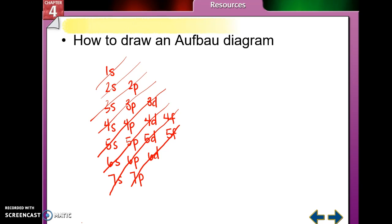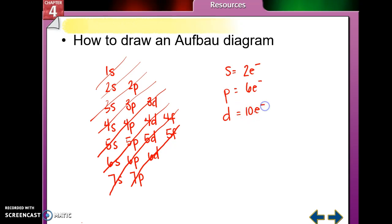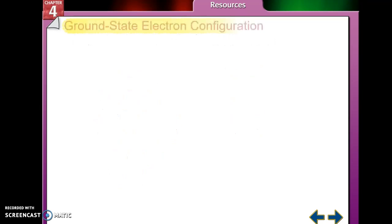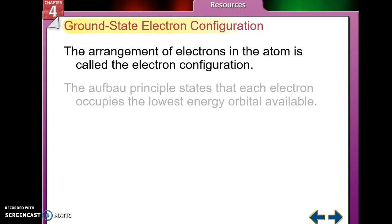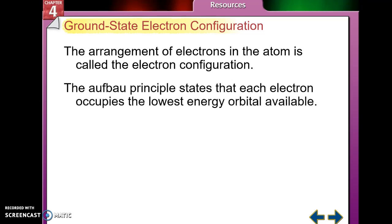Remember: the S orbital can hold up to 2 electrons, P orbitals can hold up to 6, D orbitals up to 10, and F orbitals up to 14. You have to follow the Aufbau diagram and always fill the lowest energy orbital available.